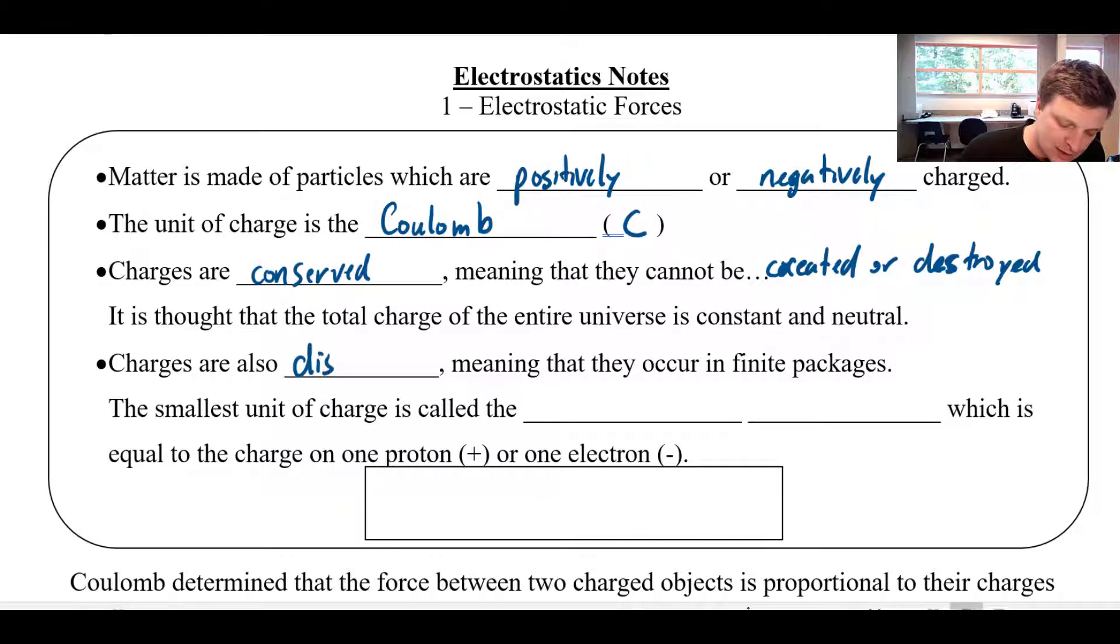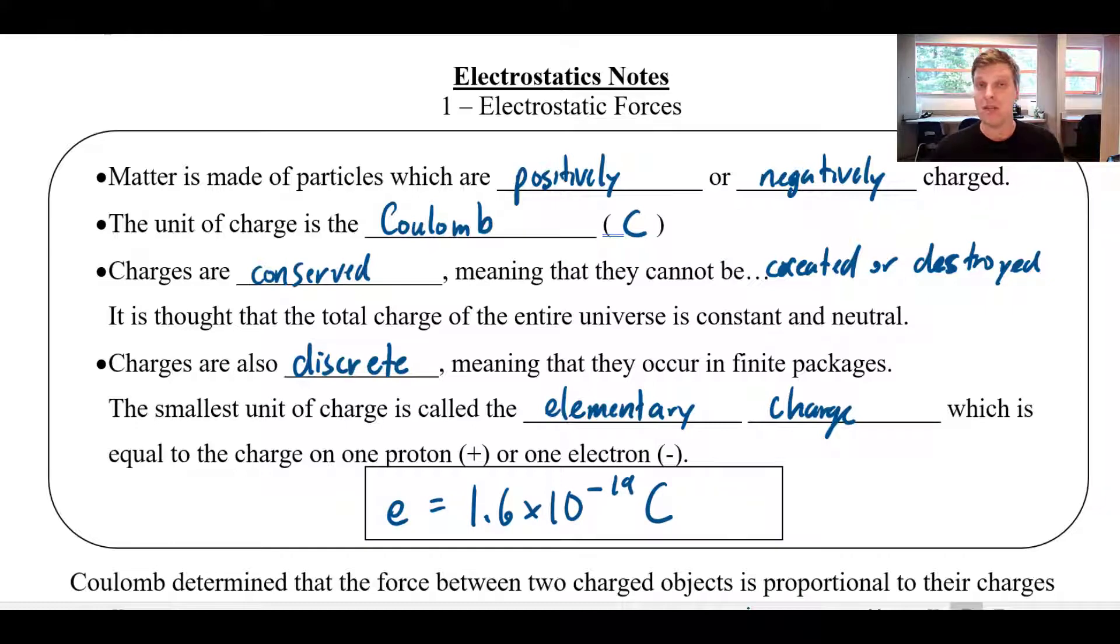Charges are also discrete. This is the idea that charges occur in finite packages. You might have an object that has a charge built up on it, and you can divide those charges into smaller and smaller chunks. Eventually you get to a point where you can't split it up anymore. That smallest little chunk of charge, we would call that the elementary charge, and that charge is the same as the charge on one proton or one electron. Protons and electrons have the same amount of charge. One is positive and one is negative, but the amount of charge is the same. The elementary charge is equal to 1.6 times 10 to the negative 19 Coulombs.